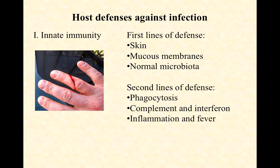By way of reminder, when the immune system is protecting us — and there are components of it that are protecting all the time — it starts with our innate immunity. Innate meaning inborn. Think of it as always on, always active, always protecting, and very importantly, nonspecific. Innate immunity doesn't particularly care what the pathogen is. If it doesn't look like self, it's going to do its best to keep it out.